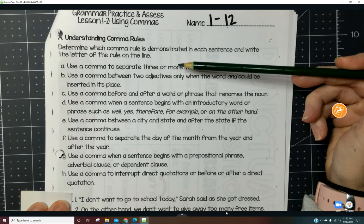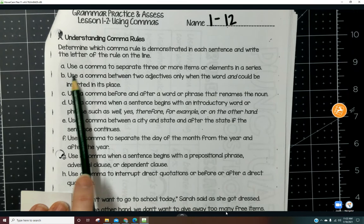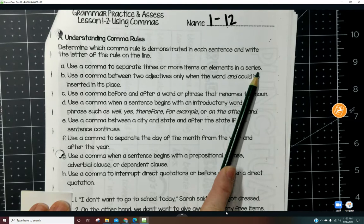So understanding comma rules, determine which comma rule is demonstrated in each sentence, and write the letter of the rule on the line. A says use a comma to separate three or more items or elements in a series. So when we're making a list, we use a comma in between.